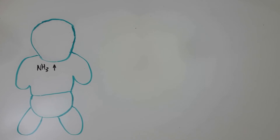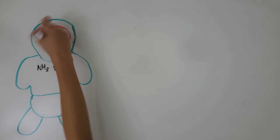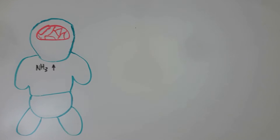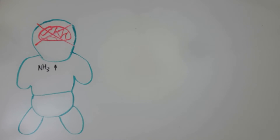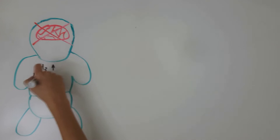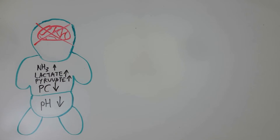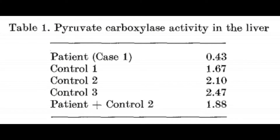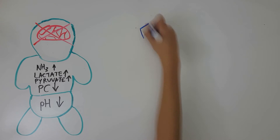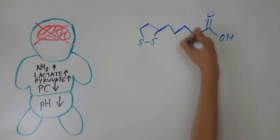In Case 2, a 16-month-old infant presented with severe mental and motor retardation, lactic acidosis, increased levels of urine lactate and pyruvate, and low levels of hepatic pyruvate carboxylase activity. As shown in Table 1, the patient had a pyruvate carboxylase activity of 0.43, whereas it is normally around 2.0.